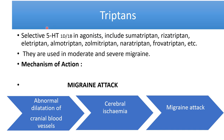Triptans are selective 5-HT1D and 1B receptor agonists. This class includes sumatriptan, rizatriptan, eletriptan, almotriptan, zolmitriptan, naratriptan, and frovatriptan. The mechanism relates to the abnormal dilatation of cranial blood vessels, which leads to cerebral ischemia and precipitates the migraine attack.